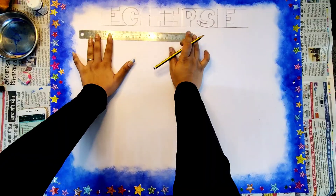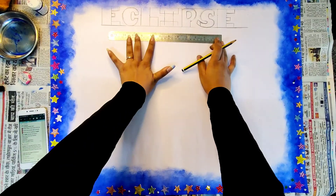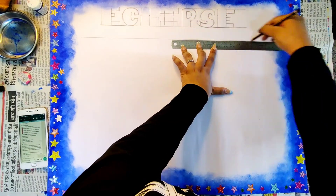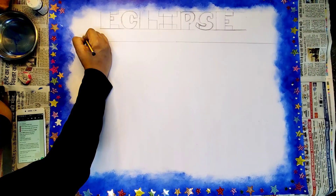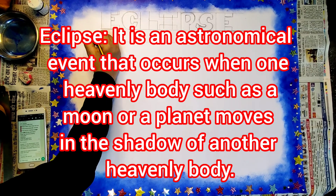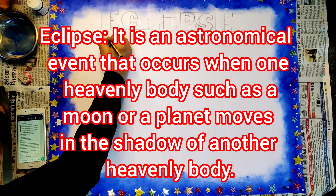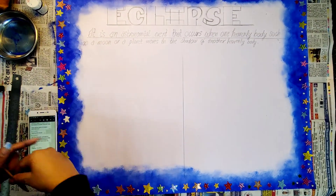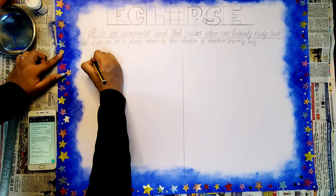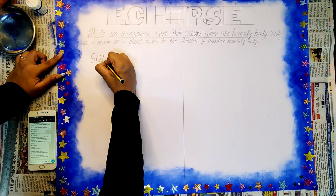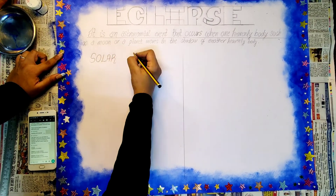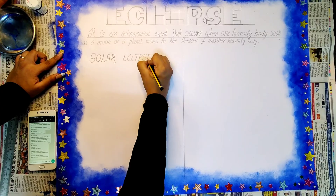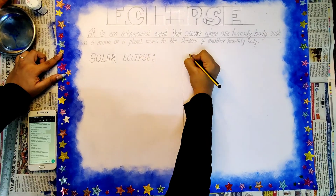Just below the main heading we'll be drawing one more line to define what eclipse is called. Here on the screen I am mentioning the definition of eclipse — you can copy the same from here. This will be dividing the page into two parts with the help of a ruler. The right side is for the lunar eclipse and the left side for the solar eclipse.